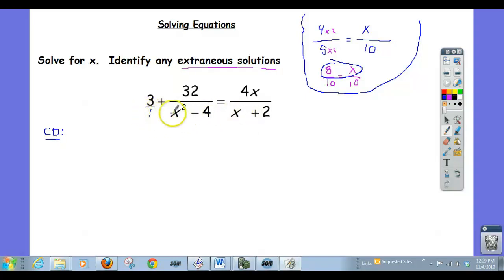So that's a 1. That doesn't need to be factored. x squared minus 4 can factor to x plus 2 times x minus 2. And then this x plus 2 is just an x plus 2. So now what I do is I build my common denominator.